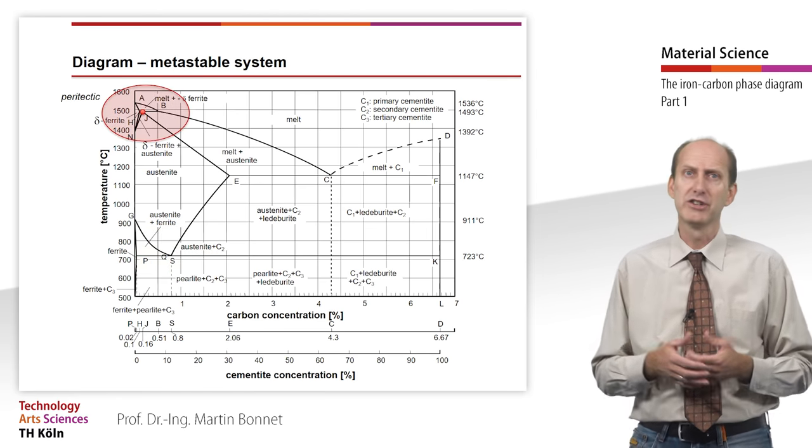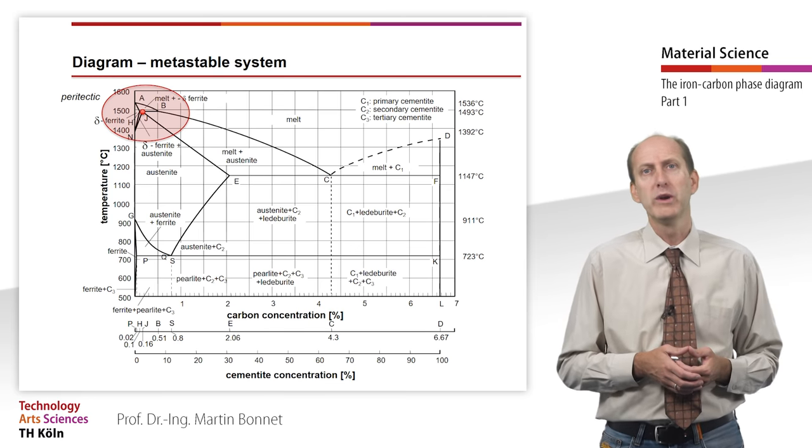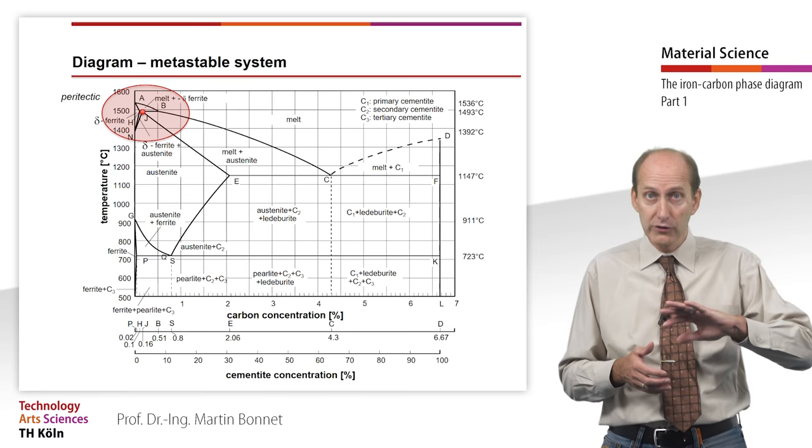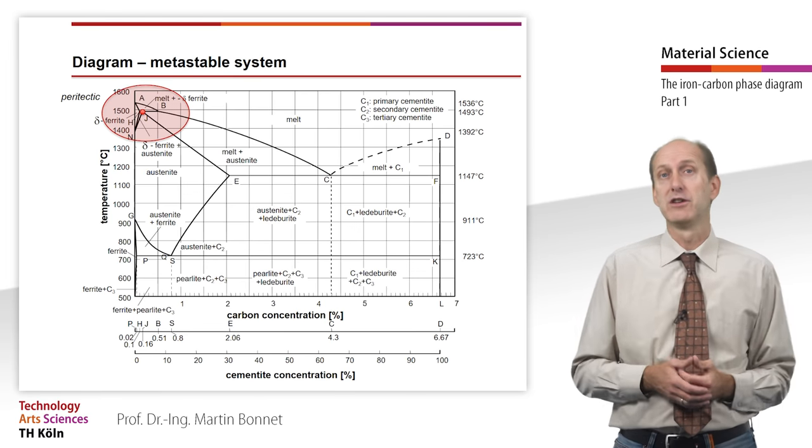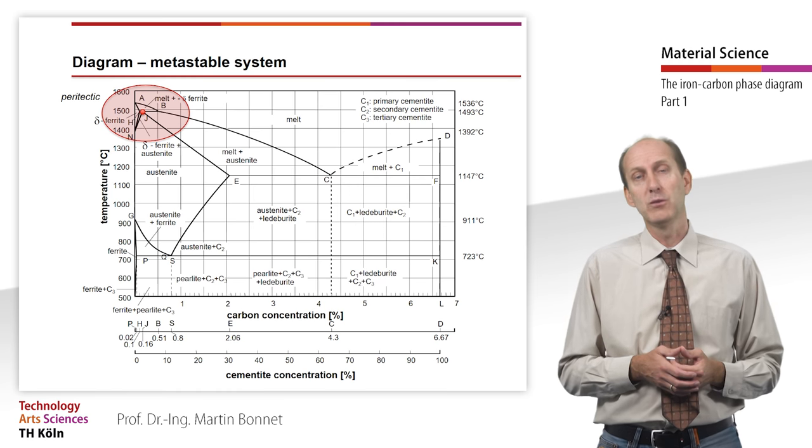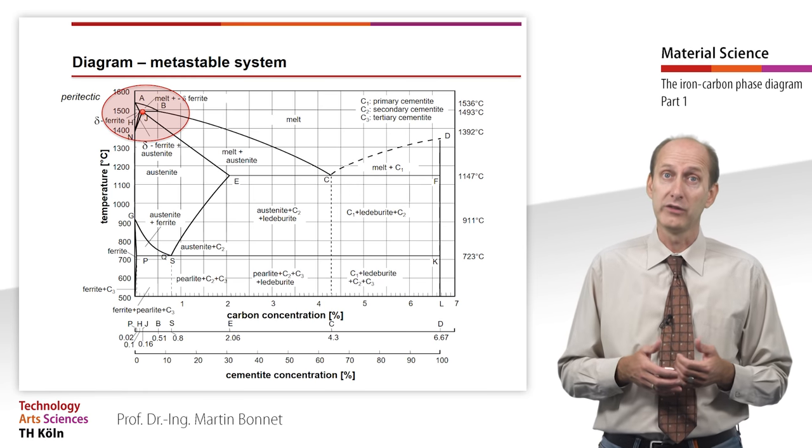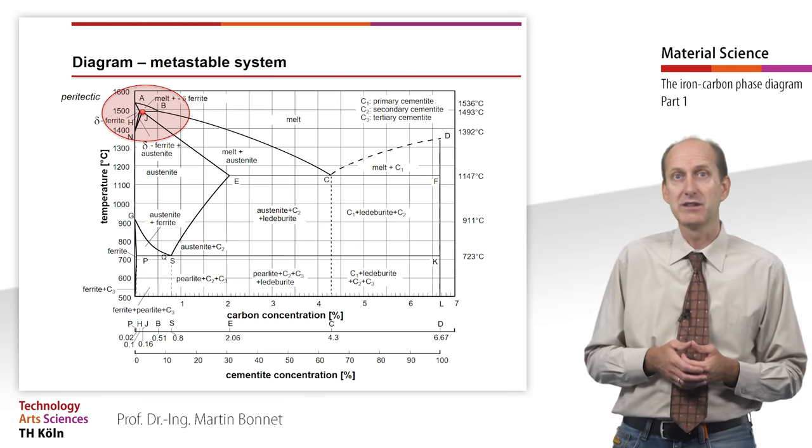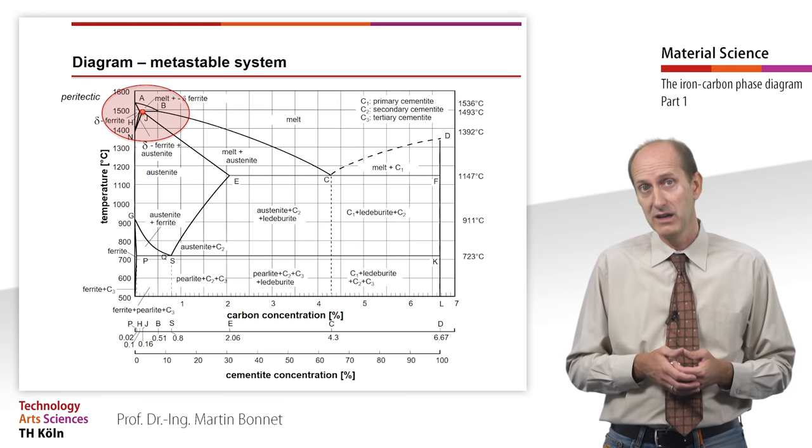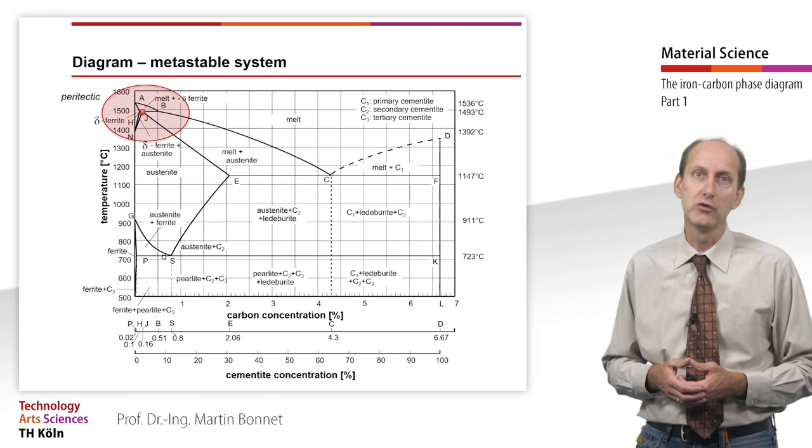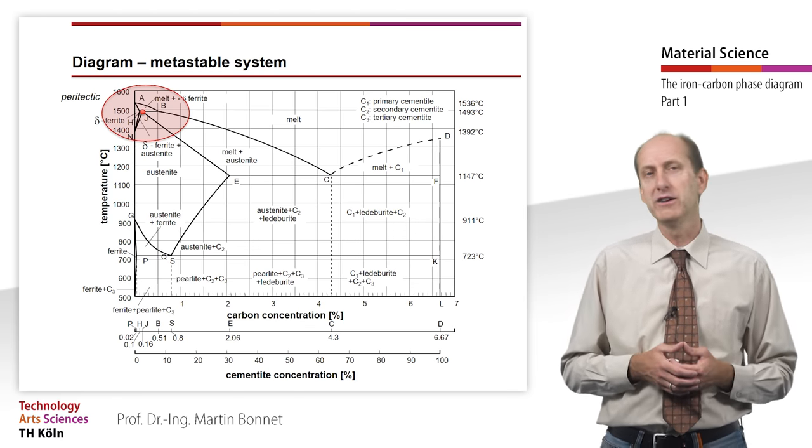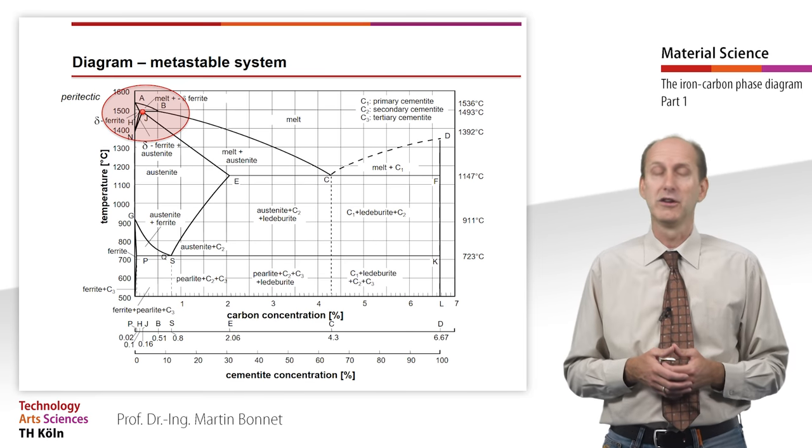At high temperatures and low carbon content, we can see an area which looks like a eutectic system turned upside down at 0.16% carbon and 1493 degrees Celsius. Delta ferrite and the remaining melt transform into austenite. This type of system is referred to as peritectic. However, it is only of minor importance for the technical use of steel.